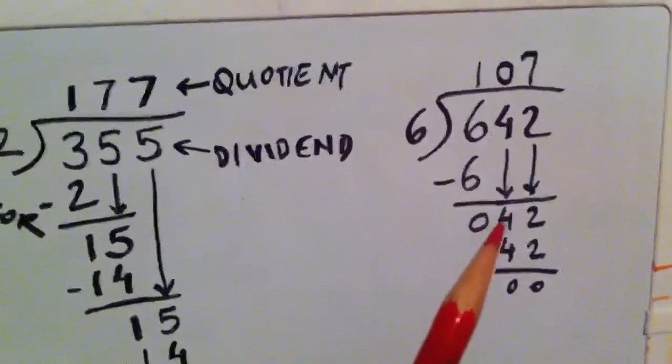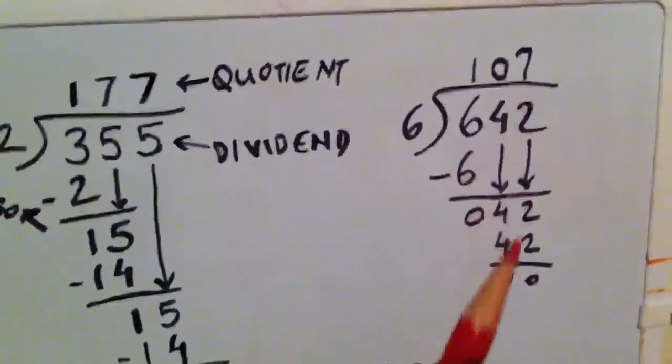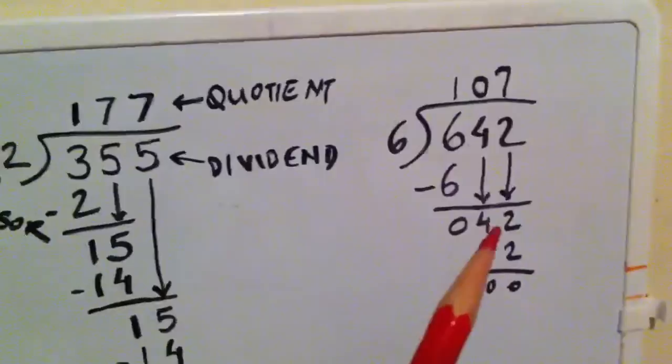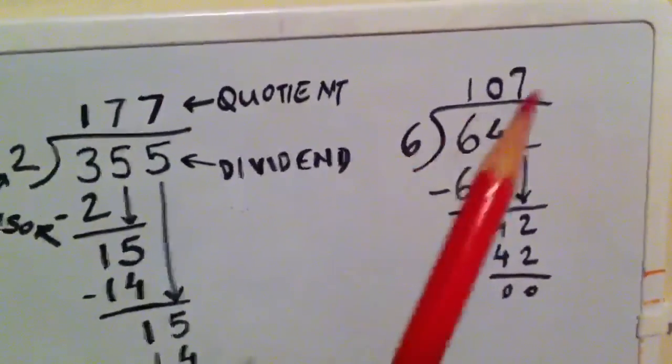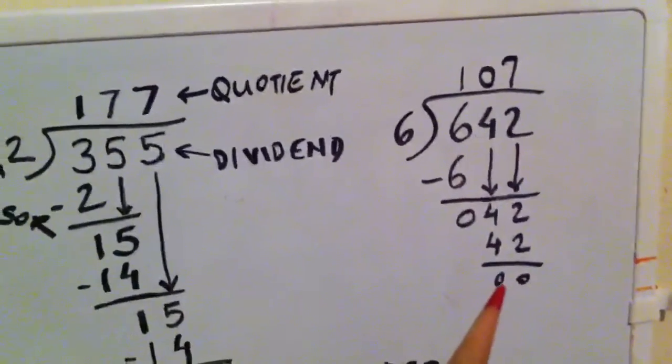So 6 times 1 is 6, and then 4 does not help. We bring down 2 here, so that makes us 42. 6 times 7 is 42, and the remainder is 0.